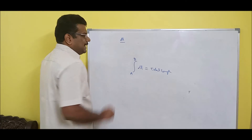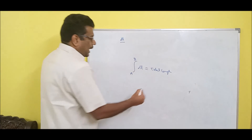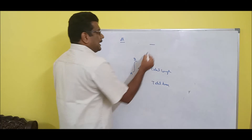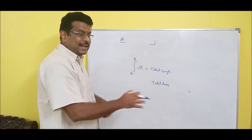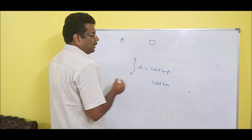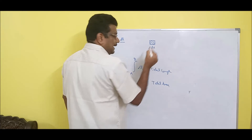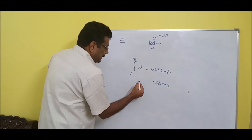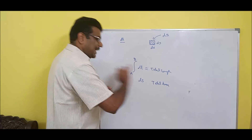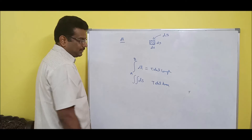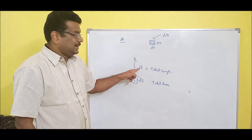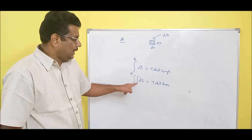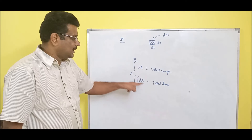If I need total length, take elemental length DL and integrate once. If I need total area, take elemental area — because area is length times breadth — which gives a small square element, called DS (surface area). Integrate in both x-axis and y-axis — that is integrating twice. So: if you want total length, take DL and integrate once. If you want total area, take elemental area DS and integrate twice.